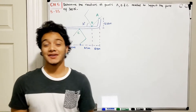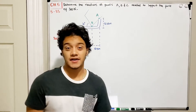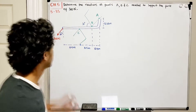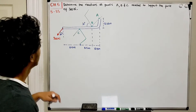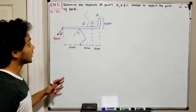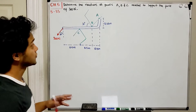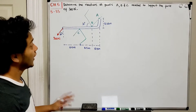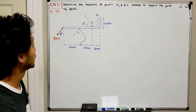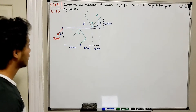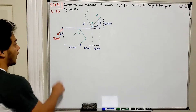Welcome back everyone to Learning by Teaching. We are in Statics and we're going to do problem 5.35. It says: determine the reactions at points A, B, and C needed to support the force of 300 N.